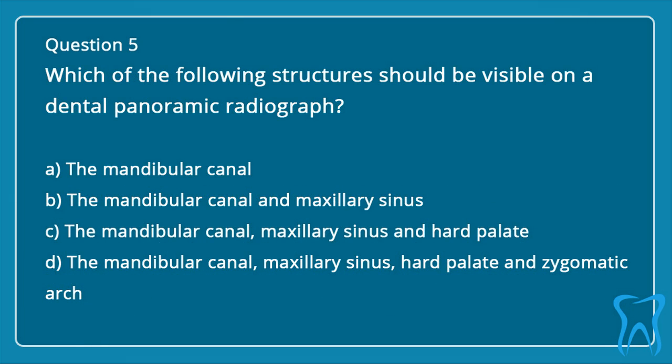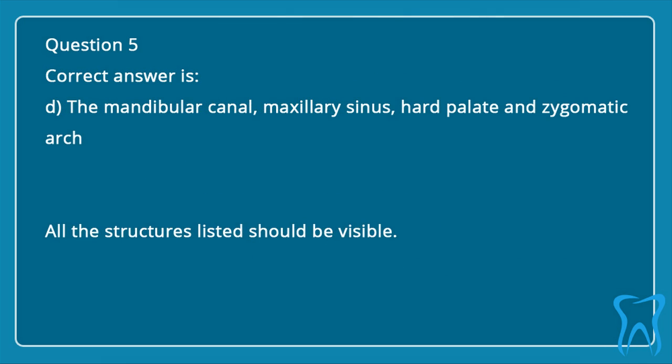Question 5. Which of the following structures should be visible on a dental panoramic radiograph? a. The mandibular canal. b. The mandibular canal and maxillary sinus. c. The mandibular canal, maxillary sinus, and hard palate. d. The mandibular canal, maxillary sinus, hard palate, and zygomatic arch. Correct answer is d: the mandibular canal, maxillary sinus, hard palate, and zygomatic arch. All the structures listed should be visible.